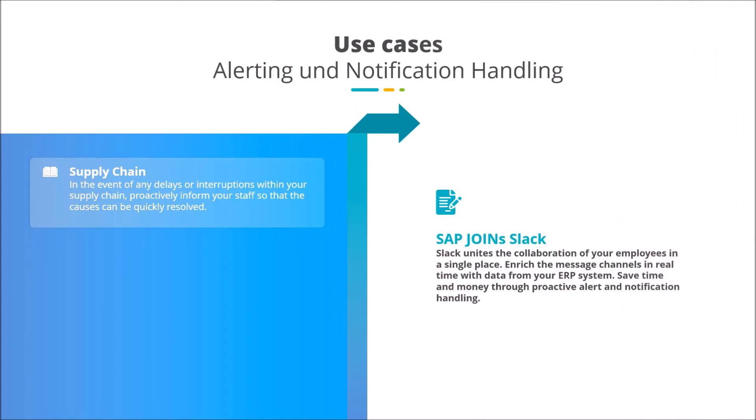First of all, we would like to give you an insight into the different application scenarios. Use Slack as a proactive service for alerting and notification handling in your value chain. If there are delays or interruptions, for example in incoming goods, production supply, or outgoing goods, inform your employees immediately.